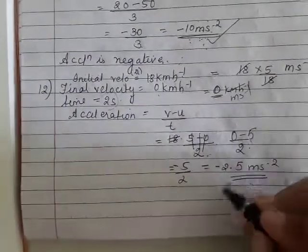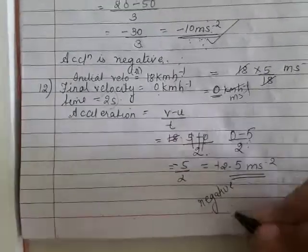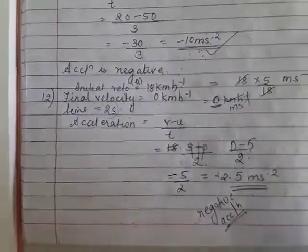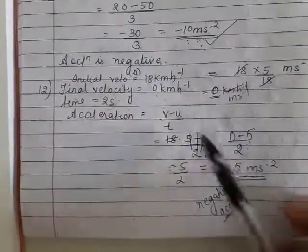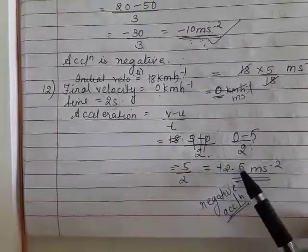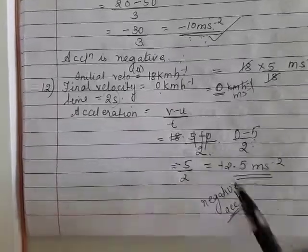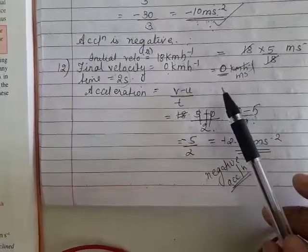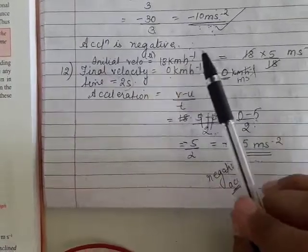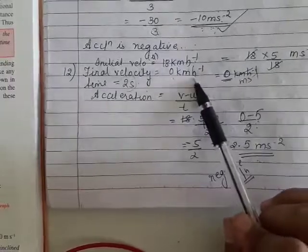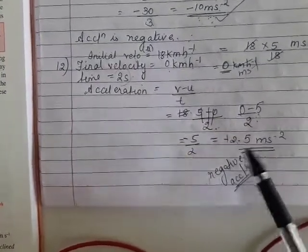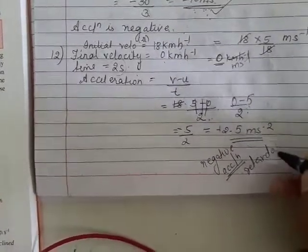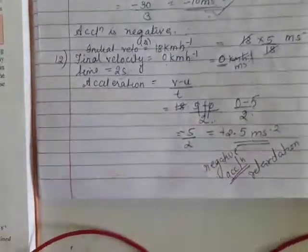We can write this as 2.5 m/s² and consider it as negative acceleration. The correction here is: initial velocity = 5 m/s, final velocity = 0, so it is 0 − 5 upon 2 = −2.5 m/s². Why final velocity 0? Because the car is coming to rest. Since the question asks for retardation, we write the answer as 2.5 m/s².